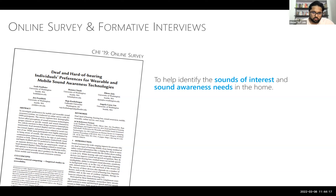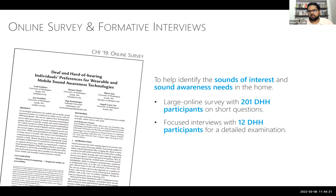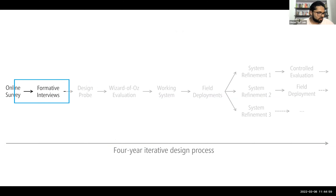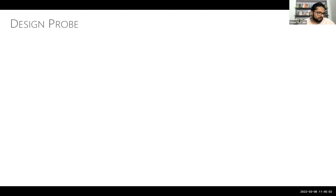In the survey, participants gave us ideas about what kinds of sounds they'd want in the home — like fire alarms and dog barks — and the different kinds of information about sound they'd want, like location, loudness, and pitch. To explore how to convey all this information, we conducted a design probe — where you give participants options for different attributes of a design and ask them to choose their preferences.